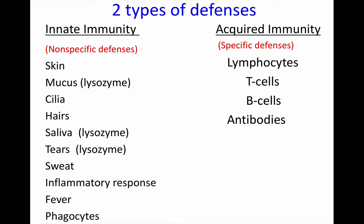With innate immunity, when we say it has nonspecific defenses, we're saying that all of these things protect you against anything and everything. It doesn't matter what kind of bacteria or virus you're looking at — all of your nonspecific defenses will protect you against anything and everything, not a specific type of bacteria or virus.